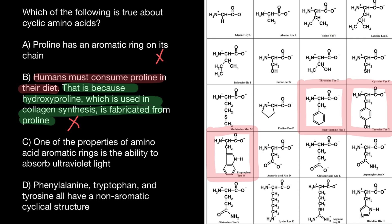And next statement C, one of the properties of amino acid aromatic rings is ability to absorb ultraviolet light. And this is a true statement.